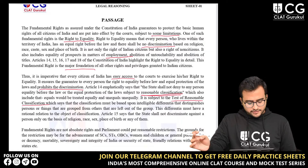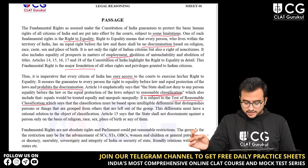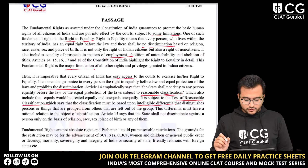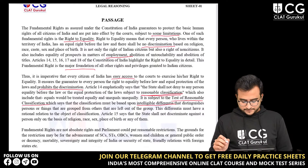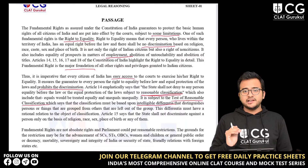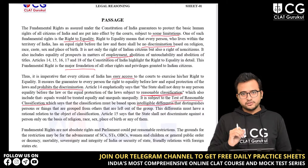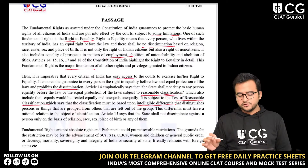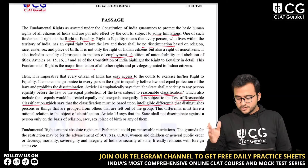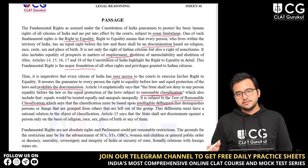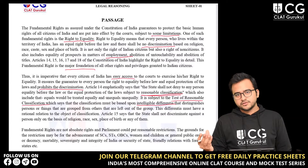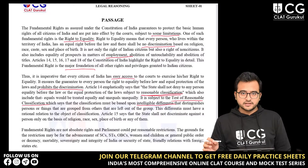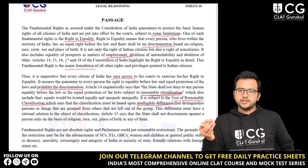The test of reasonable classification states that the classification must be based upon intelligible differentia that distinguishes persons or things that are grouped from others that are left out of the group. There should be a rational connection between those who are in the group and those who are outside the group — a proper rational reason to keep them inside and keep them outside. This is also known as positive discrimination, which is a method to ensure equality.